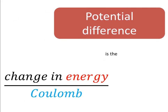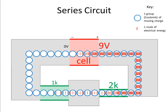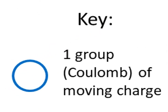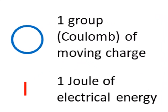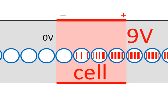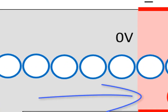Remember that potential difference refers to the change in energy per coulomb of charge between two points. We can visualize a series circuit like this: each blue circle represents a coulomb of charge, and each red stripe represents a joule of electrical energy. The cell or battery gives charges energy as they move through it. As charges move through a resistor, electrical energy is converted to other forms like heat and maybe light, reducing the amount of electrical energy the charges have. The charges return to the cell with zero energy per coulomb.